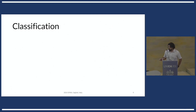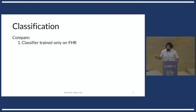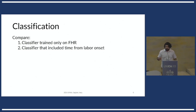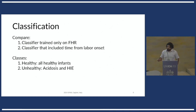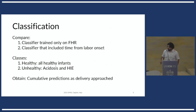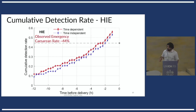So this confirmed that time from labor onset is a good indexing variable for classification studies. I compared two classifiers: one trained only on cardiotocography data, and another that also included the time from labor onset as an additional feature. This was a binary classifier between healthy and unhealthy cases. The classifier was set up to generate consecutive predictions simulating real-time monitoring, to see how many cases were being identified as labor progressed. I'm going to show the cumulative number of predictions on each group — healthy and HIE — starting with the HIE group.